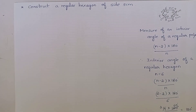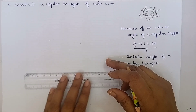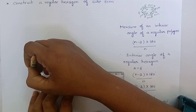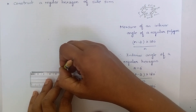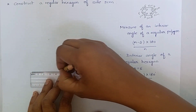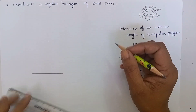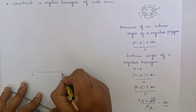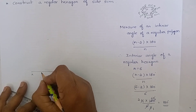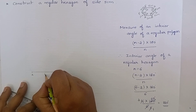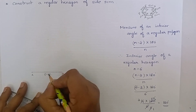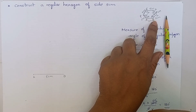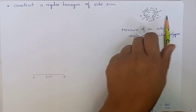Now let us start the construction. Draw a line which measures 5 cm. Name this as AB. AB measures 5 cm. We know that angle A measures 120 degrees and angle B measures 120 degrees.